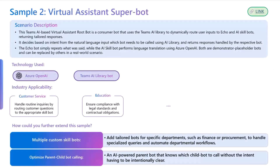The sample for today is an AI virtual assistant super bot. Why we're calling it a super bot is because it helps call other sub bots, or if you want to call it a parent bot, then it helps call other child bots. How it does that is it basically uses AI to figure out the intent. This is built using the Teams AI library, which is our SDK that allows you to build AI-enabled bots for Microsoft Teams.